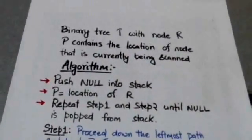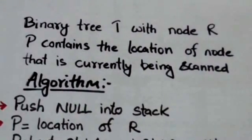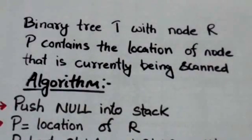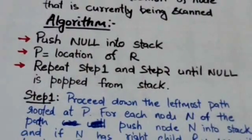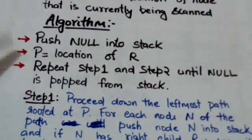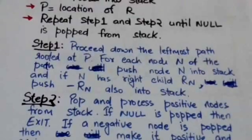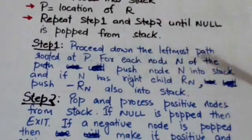This is the algorithm to traverse binary tree T in post-order using a stack. Here the root of binary tree T is node R, and variable P contains the location of the node currently being scanned. First of all, we will push null into the stack, then the location of root R will be assigned to variable P. After this, the following two steps will be repeated until null is popped from the stack.